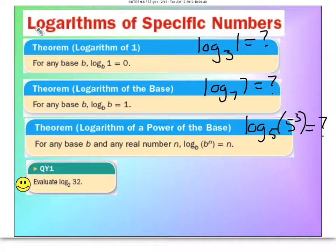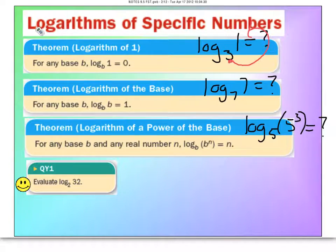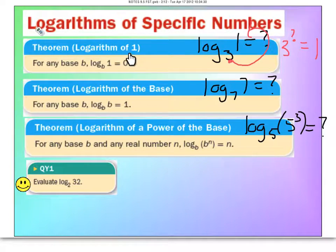Look at three properties that he discovered. This one says if you have log base B of 1, it will always equal 0. You don't have to memorize this. For example, log base 3 of 1 — just rewrite that log as an exponent: 3 to some power equals 1. By the property of exponents, anything raised to the 0 power is 1. That's why the answer is 0.